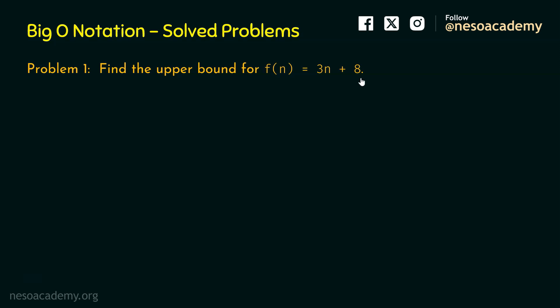The upper bound of the function f(n) will be a function, let's say g(n), which is asymptotically bigger than f(n) — in other words, f(n) is Big O of g(n). In the last presentation, we were given both f(n) and g(n) and our job was to find whether g(n) is asymptotically bigger than f(n). But this time, g(n) is not available to us — we need to find g(n), assuming it is the upper bound of f(n).